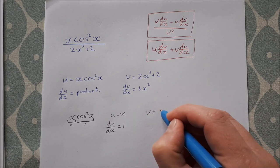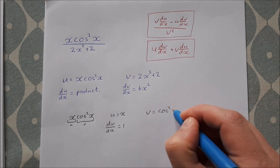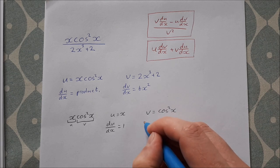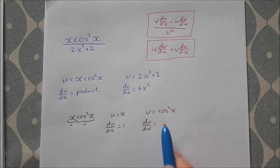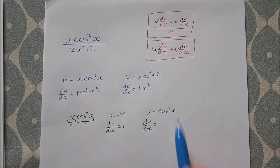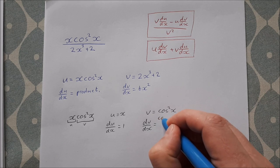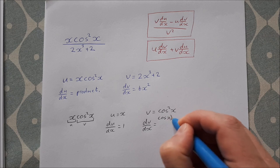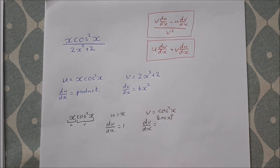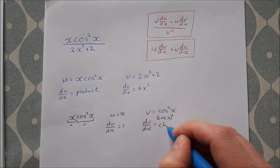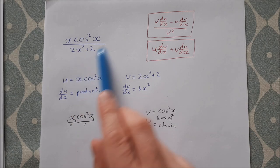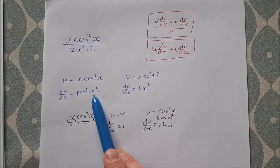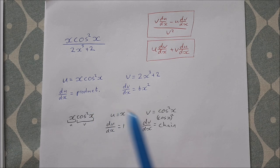v is equal to cos²x. dv/dx—well, if we look at this, cos²x is the same as (cos x)², and this is actually a chain rule. So now we've gone from a quotient rule, inside that we have a product rule, and inside the product rule we have a chain rule.